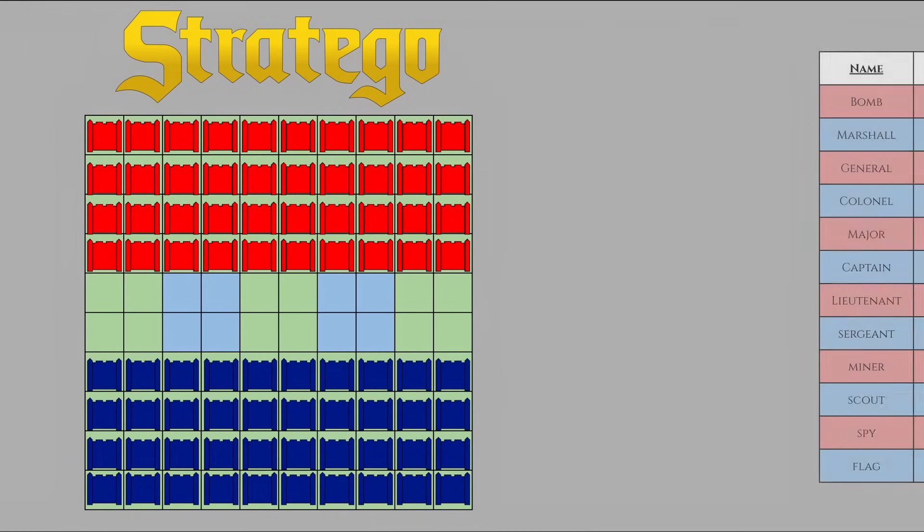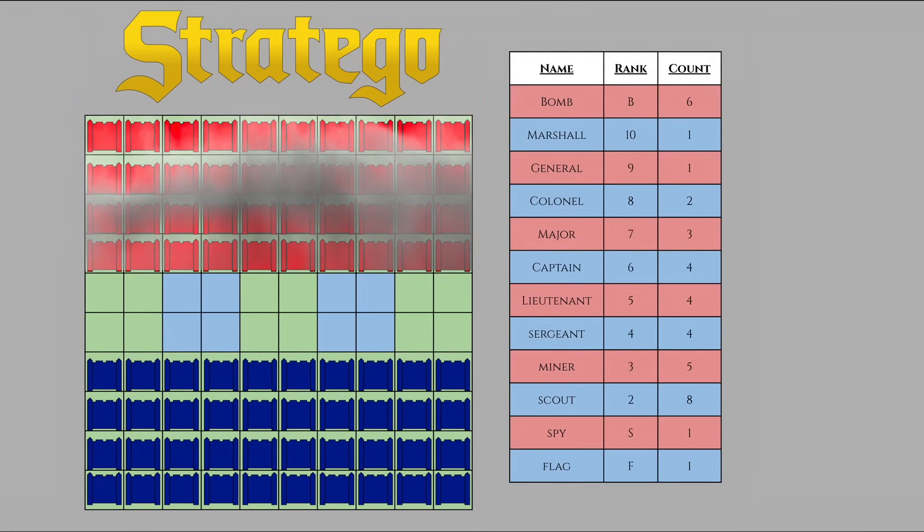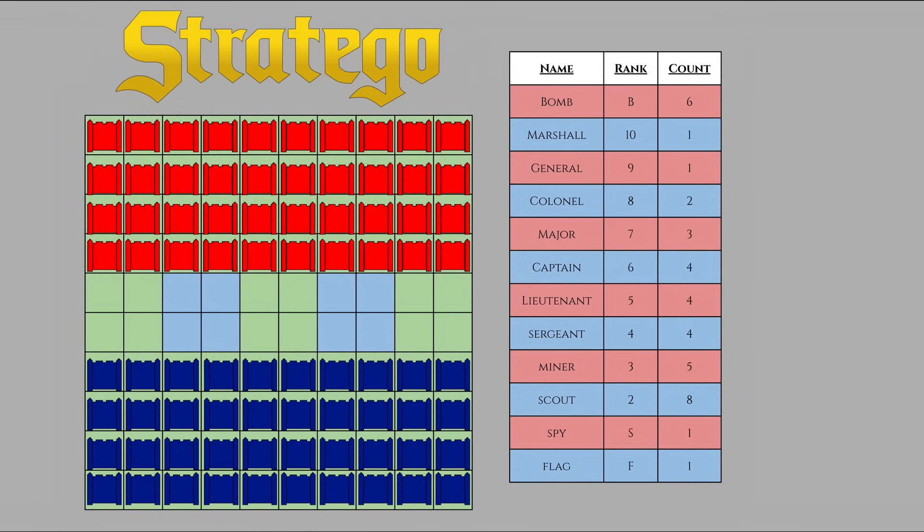Each piece has its own designated rank and name, with higher numbers corresponding to stronger pieces. Six of these pieces are bombs, which are immovable. Of course, each person also doesn't know how the other person is setting up their pieces, adding a level of information asymmetry that isn't seen in common board games like chess or checkers. After each player has decided where they want to position their pieces, the real game begins.